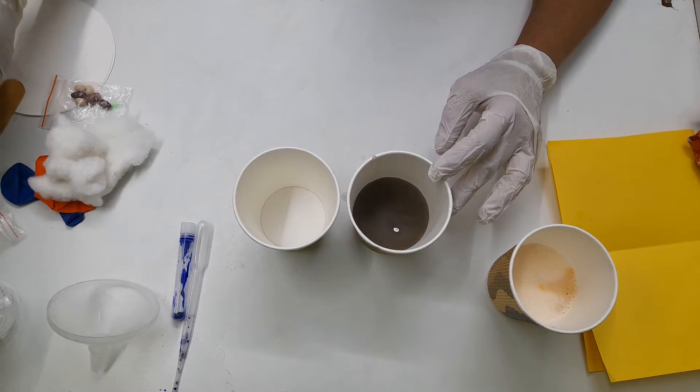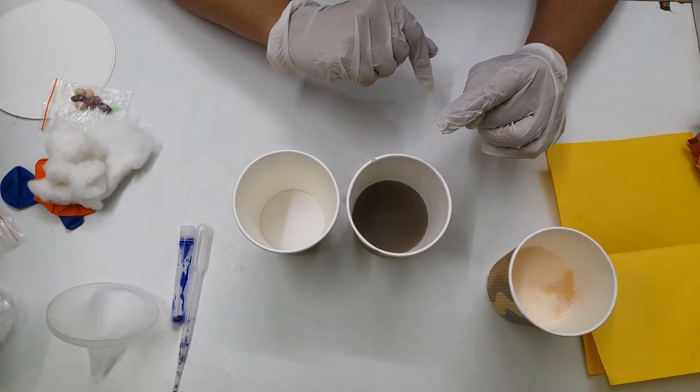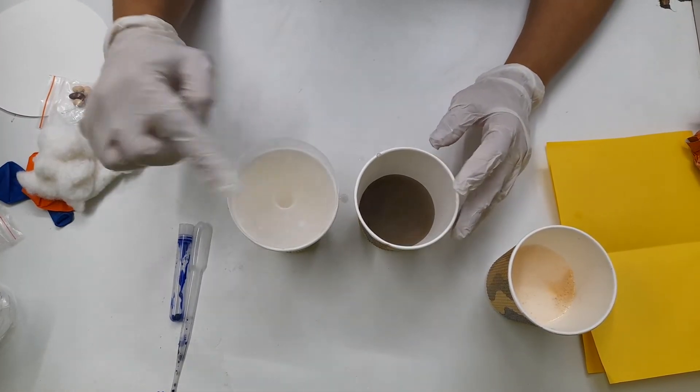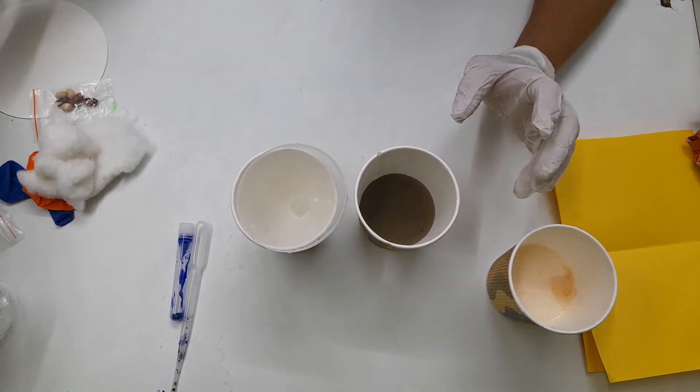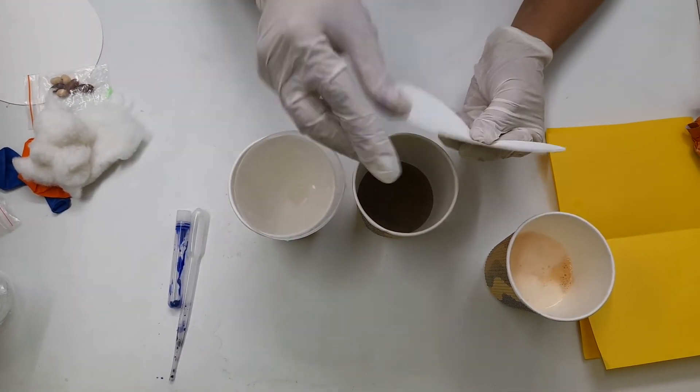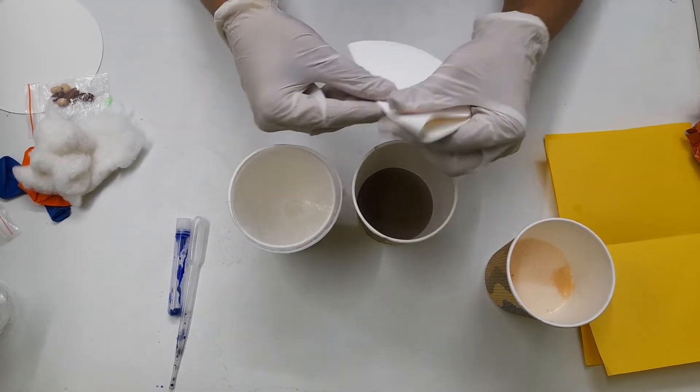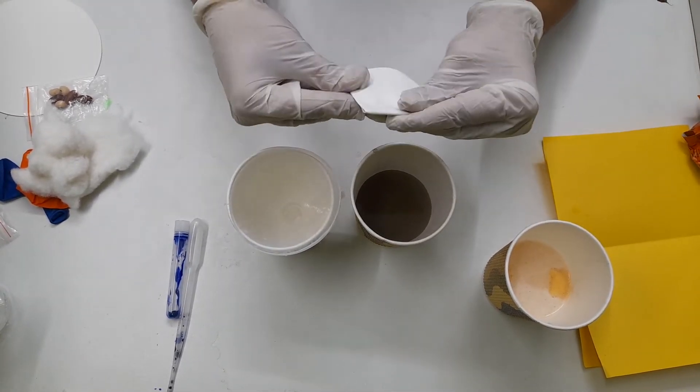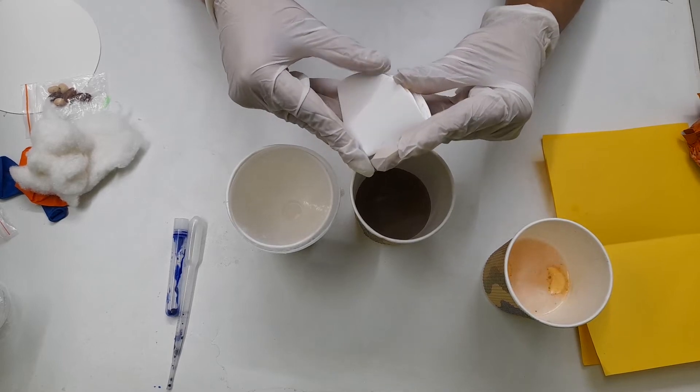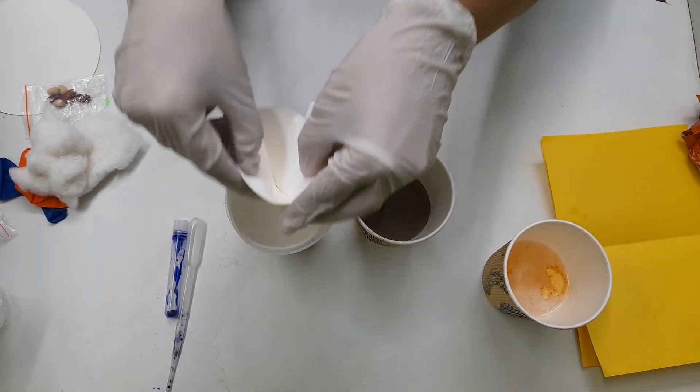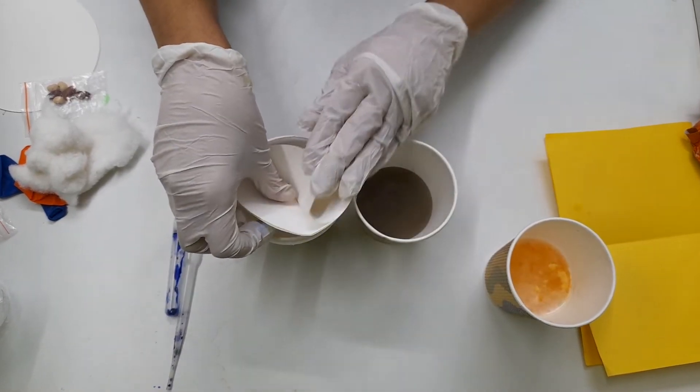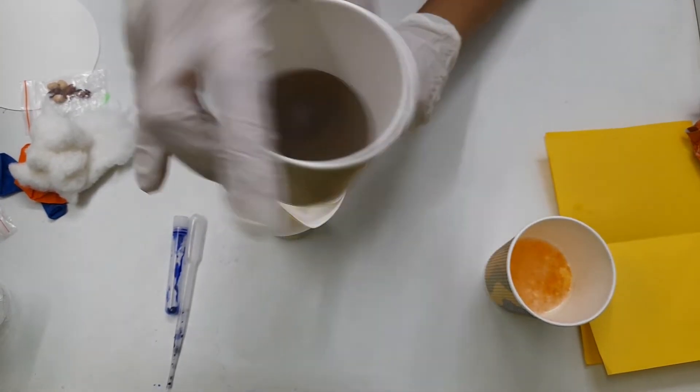So I can get this water and sand back if I filter this. So for that I have this funnel and I have filter paper. So what I will do is I will just take two filter papers, fold them once, then fold it again and then open it from any one side and then keep it onto the funnel and then you filter this water.